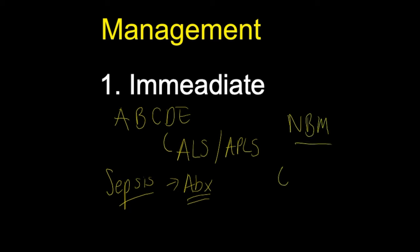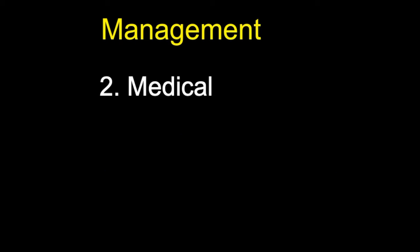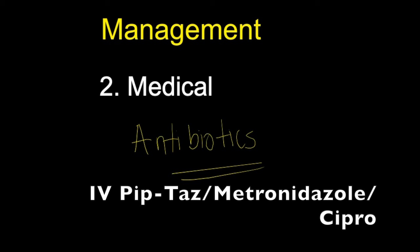Get an ENT review — ear, nose, and throat, or otolaryngology — as they are the experts to involve in the care of mastoiditis. Also ensure the patient receives appropriate analgesia to lower temperature and control pain. For medical management, the main and crucial intervention is antibiotics. The patient will need antibiotics in a confirmed case of mastoiditis; consult local microbiology guidelines. Options include IV Piperacillin-Tazobactam, Metronidazole, or Ciprofloxacin if the patient is penicillin allergic.